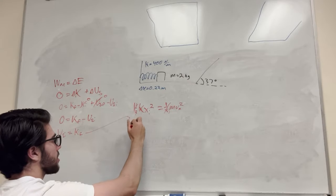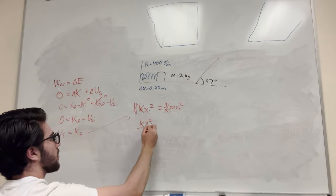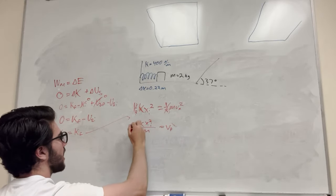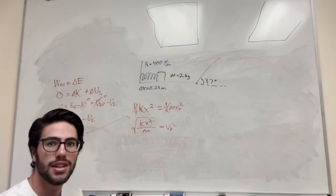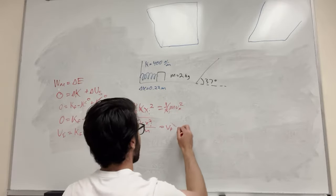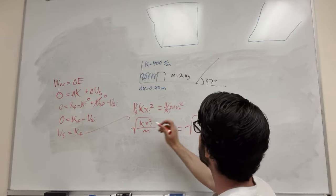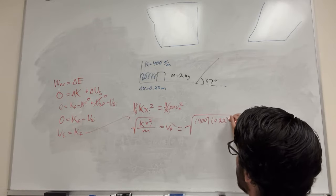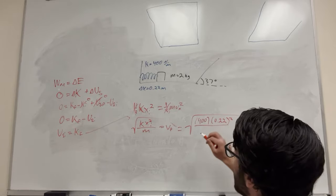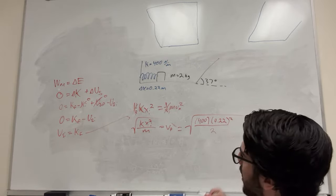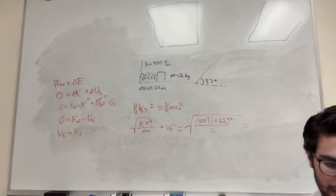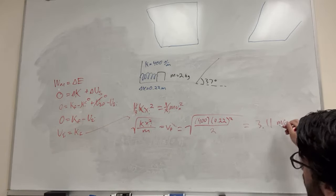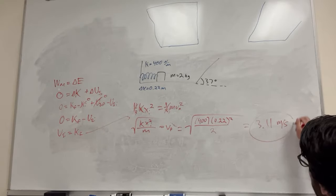Let's expand the numbers. U-spring is one-half k x-squared, equal to one-half mass times velocity-final squared. The one-halves drop out because they're on both sides. We're left with k x-squared equal to m v-final squared. To find velocity, divide mass over: k x-squared over mass equals v-final squared, then take the square root. Plugging in our numbers: k is 400 N/m, x is 0.22 m (squared), mass is 2 kg — you get a velocity of 3.11 meters per second. That's how fast the block is going as soon as it leaves the spring. That's Part A.